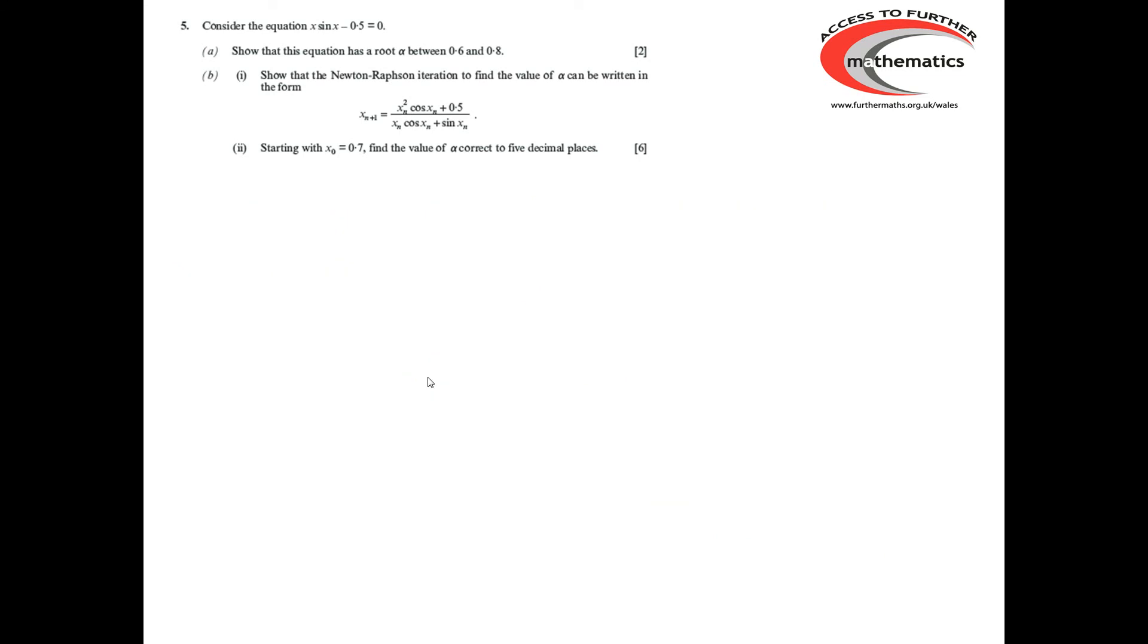Starting with x_n = 0.7, using our calculator, we can obtain x_1 is 0.7415796. Now we're aiming to get the value of alpha correct to 5 decimal places. So it's certainly worth putting your answers to at least one, and probably two extra decimal places and wait for the values in the iteration to settle to one or two more decimal places. x_2 is 0.7408411, x_3 is 0.7408409, and x_4 is 0.7408409. So it certainly looks as if the required value is 0.74084.